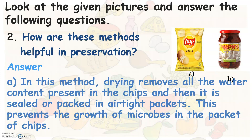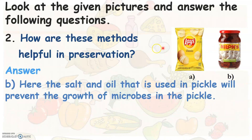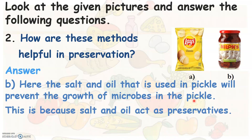Likewise, in the case of pickling, how is the method helpful in preservation? We use salt and oil in order to make pickle. This prevents the growth of microbes in the pickle, because we have already learned that salt and oil can act as preservatives.